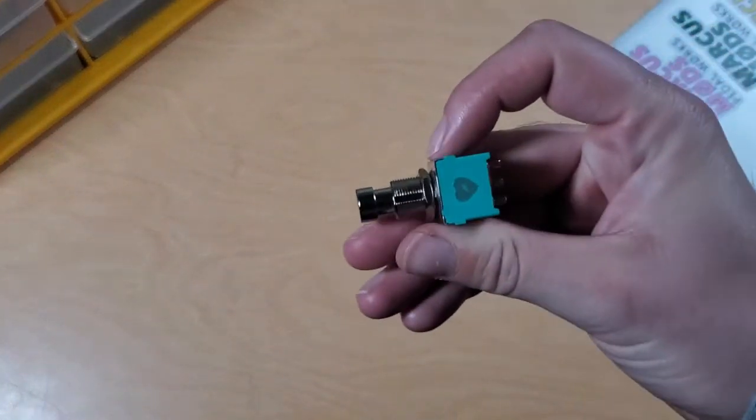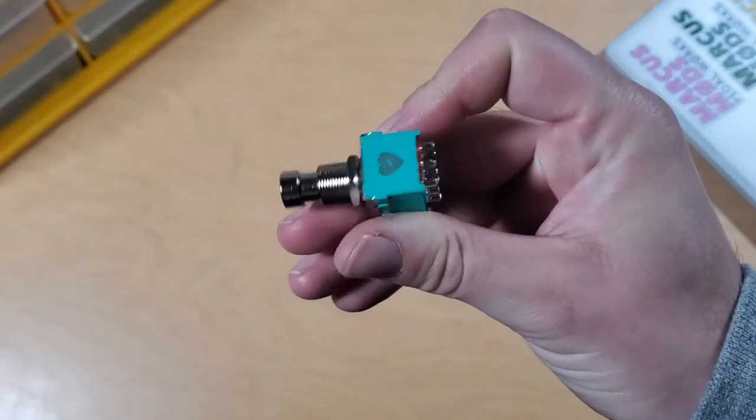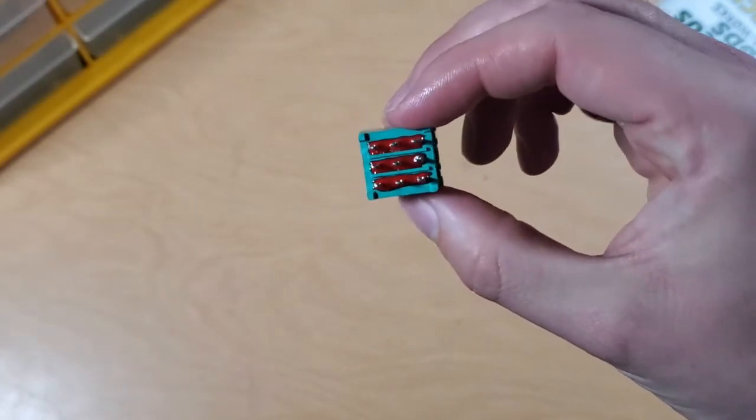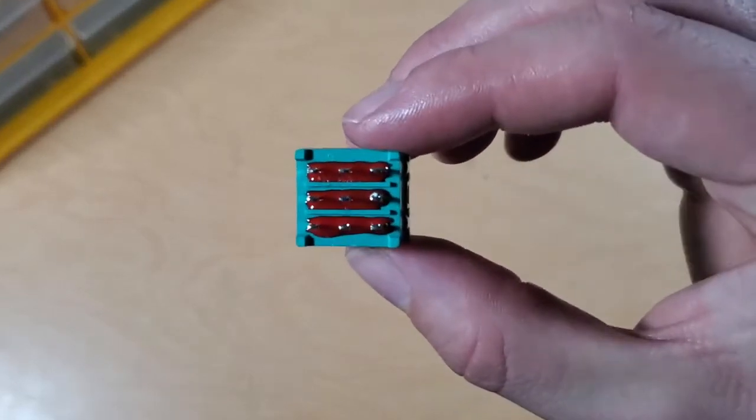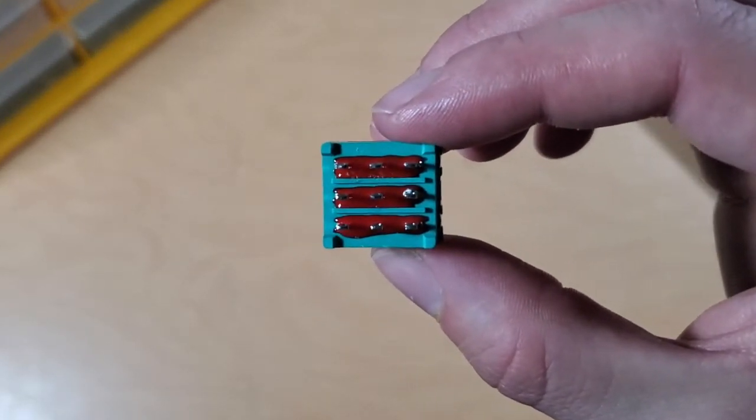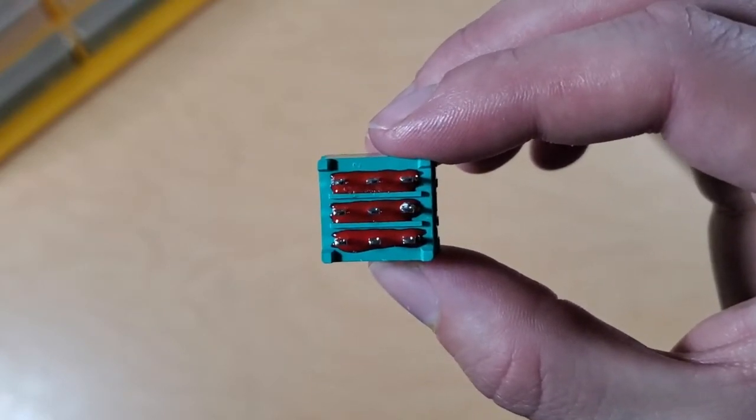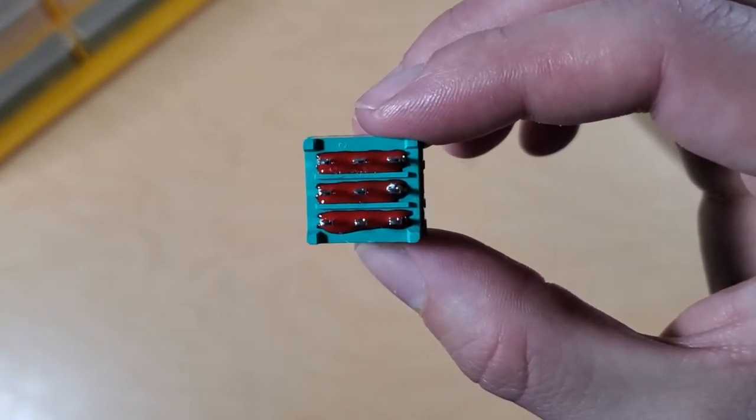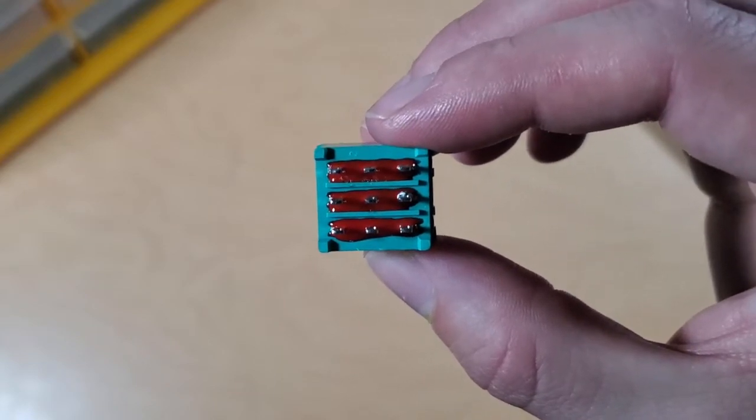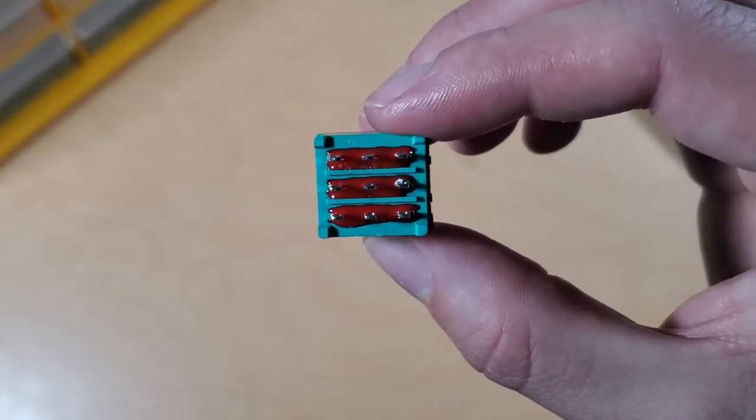In order to understand the problem we're trying to solve, let's look at a normal 3PDT switch. So this switch has 9 connections, and it's easiest to think of them as 3 columns of connections. Usually, the way this would work is your guitar signal would come in on the left side, go out on the farthest right side, and then the middle part would control your LED.